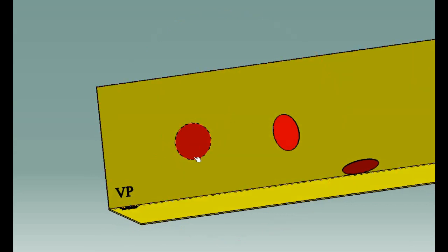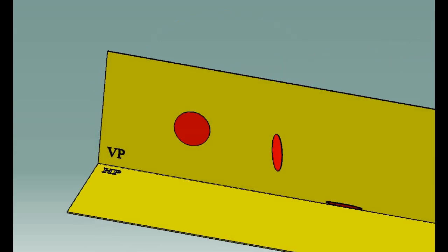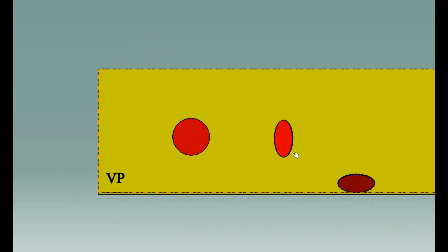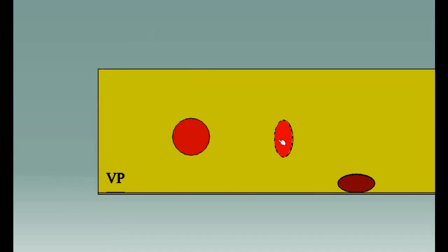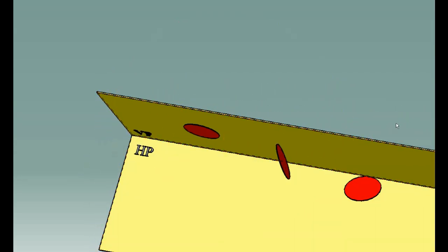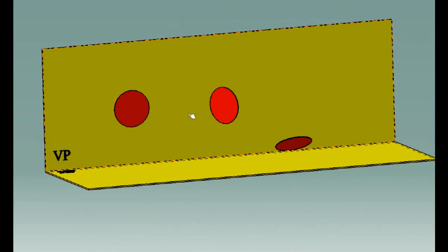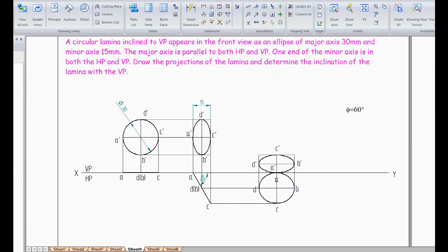We have kept it on VP because in front view it should look like an ellipse. So in the second step it looks like an ellipse. The circular lamina kept on VP in the second step is going to look like an ellipse. We need to find the angle — the true inclination with respect to VP, that is φ — which is similar to a previous problem where we took a rectangle lamina which looked like a square, then another problem where a rectangle looks like a smaller rectangle. Here, a circle looks like an ellipse.